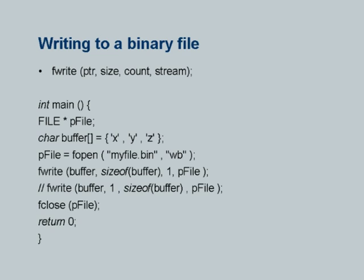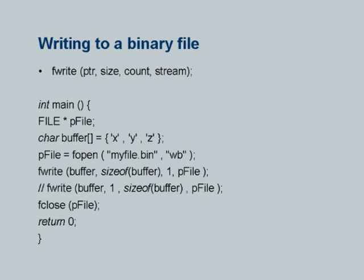Just as I can fopen a file, I can fclose a file, which is much simpler. Just as there can be an error while opening a file, it is possible to get an error while closing a file. Just as fopen returns a pointer, fclose also returns a value, and it is possible to test that value to check whether the file was properly closed or not.